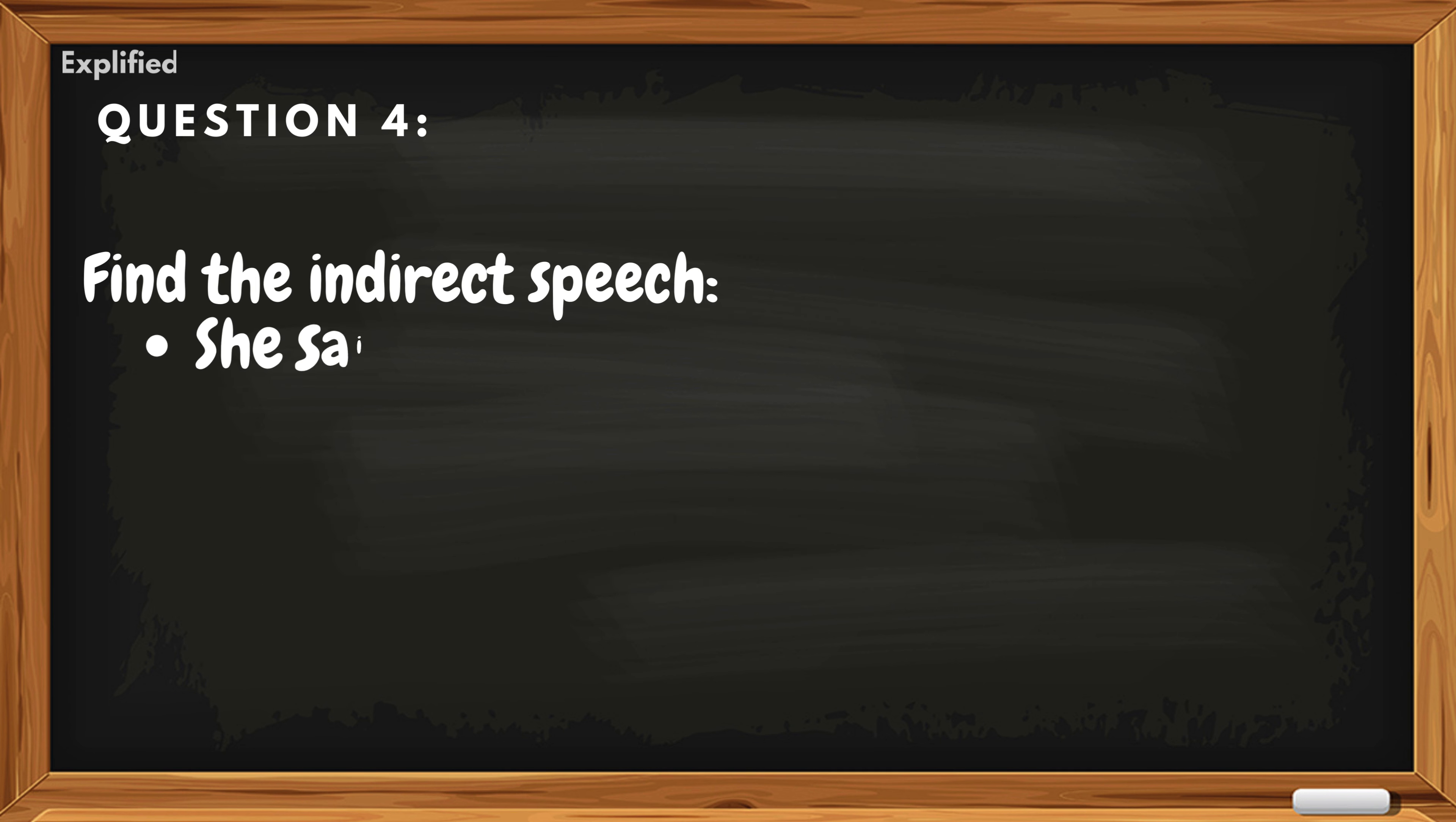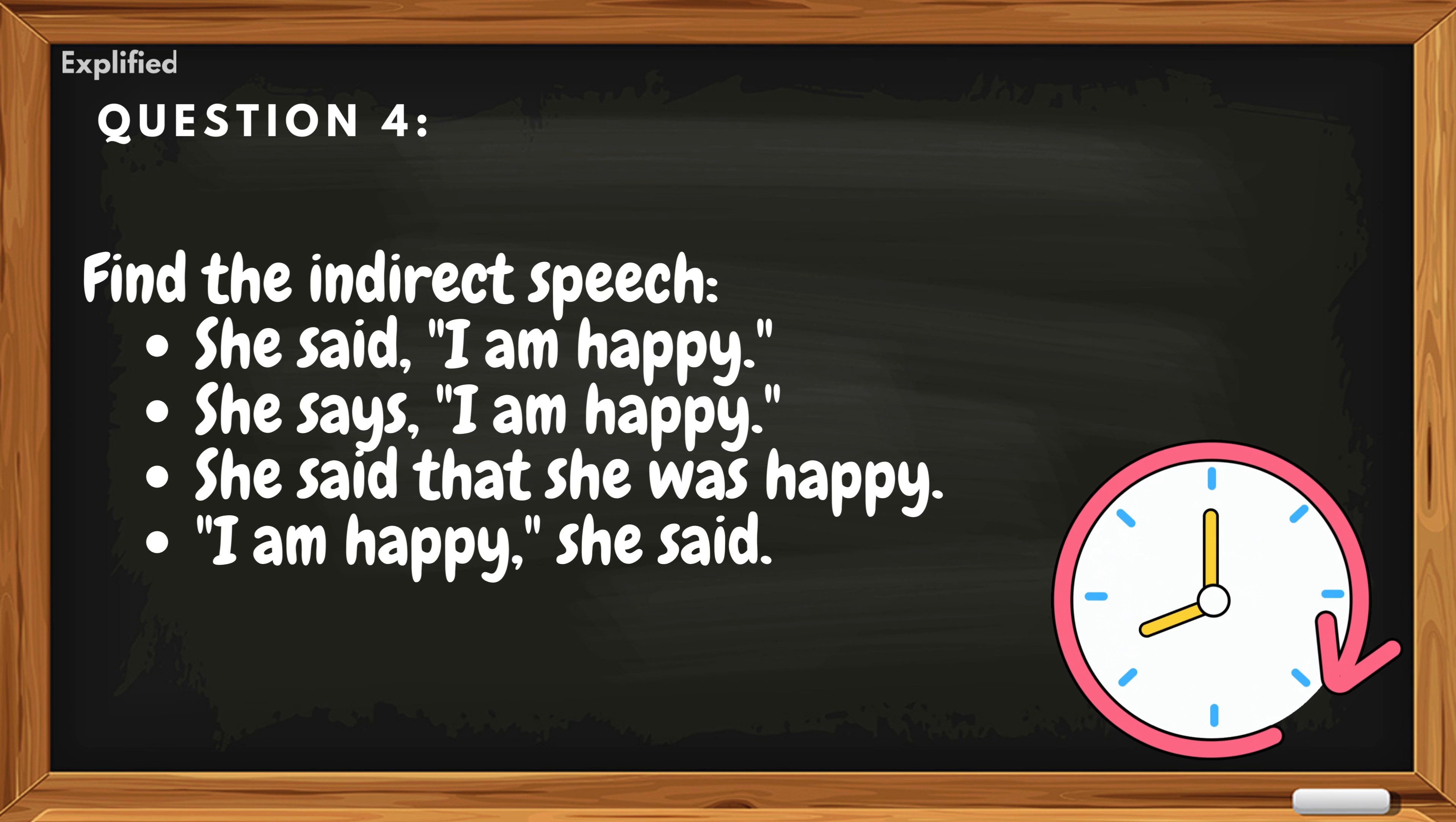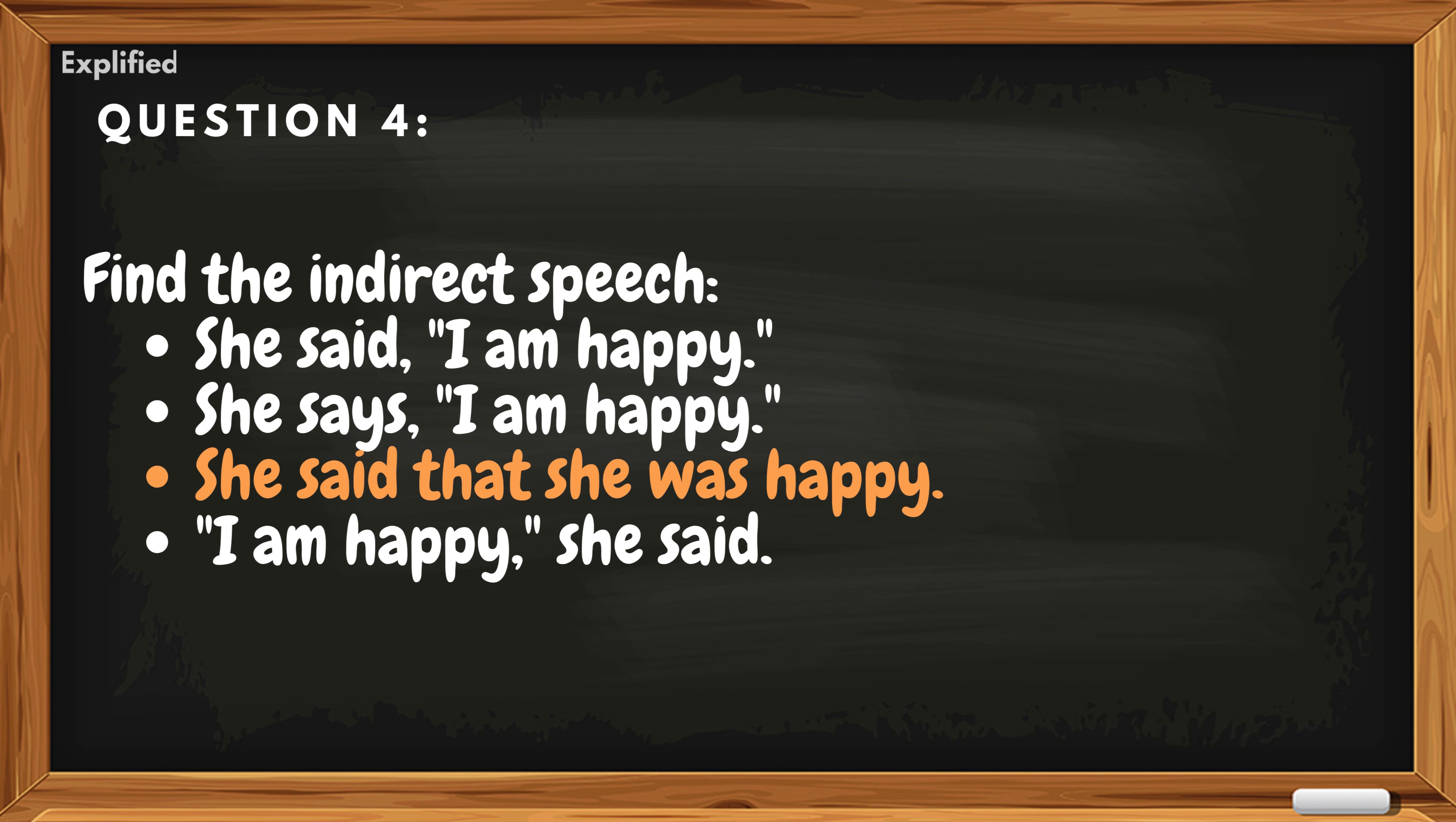Question 4: Find the indirect speech. She said, I am happy. She says, I am happy. She said that she was happy. I am happy, she said. Answer: She said that she was happy.